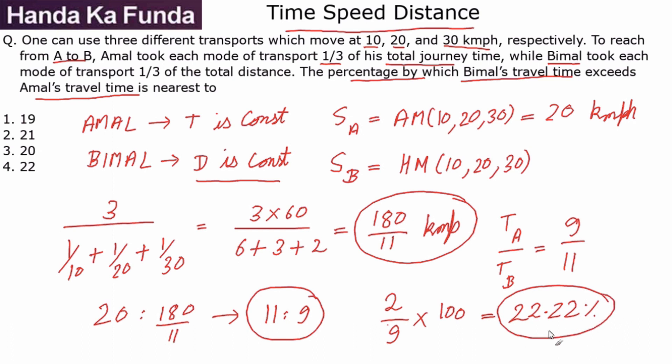You could calculate the answer very quickly and get to option 4 because of this concept. This is a concept that you need to know; it's discussed in detail in the concept videos. Once again, I will repeat: when time is constant, the average speed is the arithmetic mean of the values given. When the distance in each part of the journey is constant, the average speed, which is the speed for Bimal here, is the harmonic mean of the values given. If you know this concept, the question is very simple, very straightforward, and should have been attempted in the exam. Otherwise, it might be a little bit complicated.